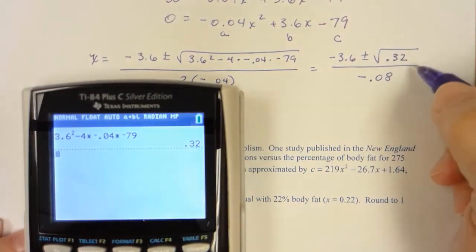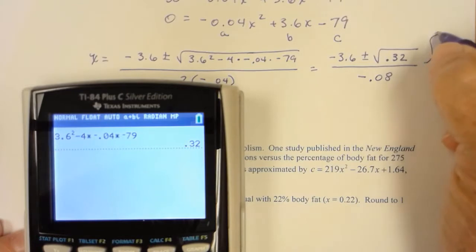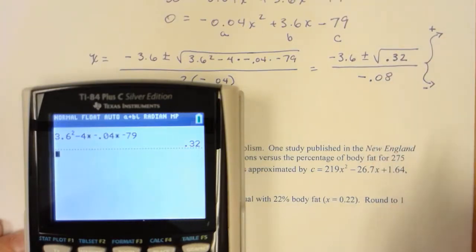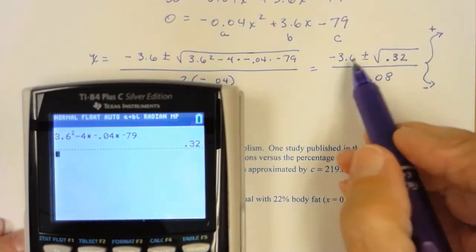So that tells me I'm going to have two rational solutions. And remember what I do in class, this is going to be my upper route and this will be my minus route.